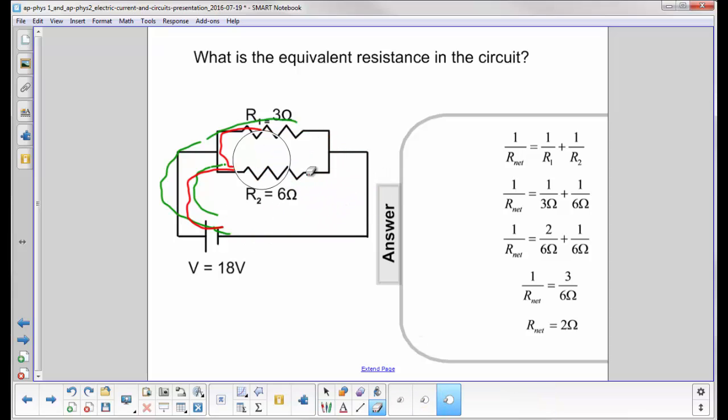Let me just erase all this stuff. And to find the equivalent resistance for a parallel circuit, it's 1 over R net or equivalent equals 1 over R1 plus 1 over R2.